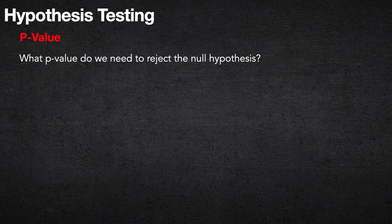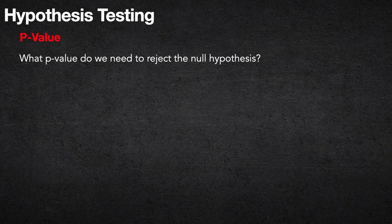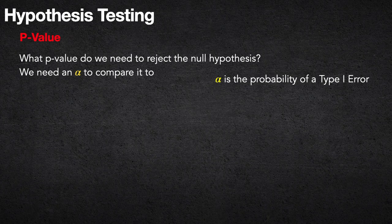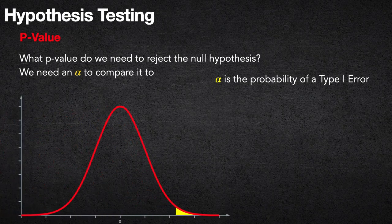What p-value do we need to reject the null hypothesis? We need an alpha to compare it to. Alpha is the probability of a type 1 error. In the previous slide, the small yellow area to the right was the p-value. Alpha also lives in this area in a right-tailed test — it's the threshold we compare the p-value to. It's the amount of uncertainty we're willing to deal with.